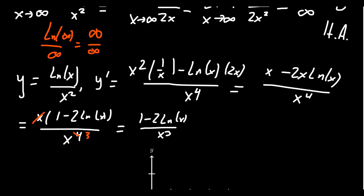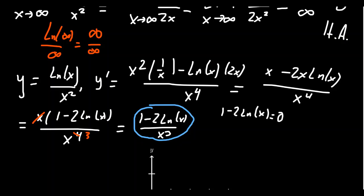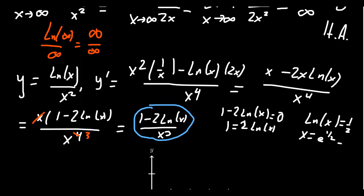We need to remember f'(x) = (1 - 2·ln(x)) / x³ because we'll take the second derivative in a moment. For critical numbers: the denominator is zero at x = 0, which is the boundary of the domain. The numerator equals zero when 1 - 2·ln(x) = 0, giving ln(x) = 1/2, so x = e^(1/2) = √e ≈ 1.65.